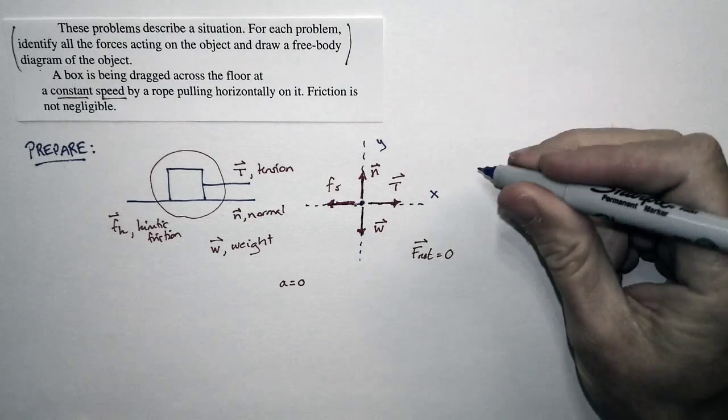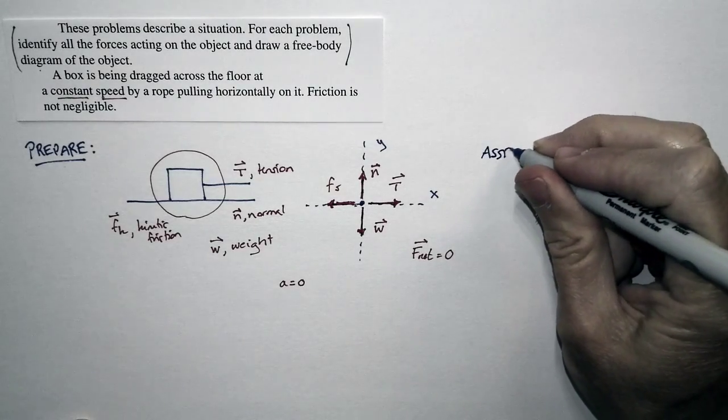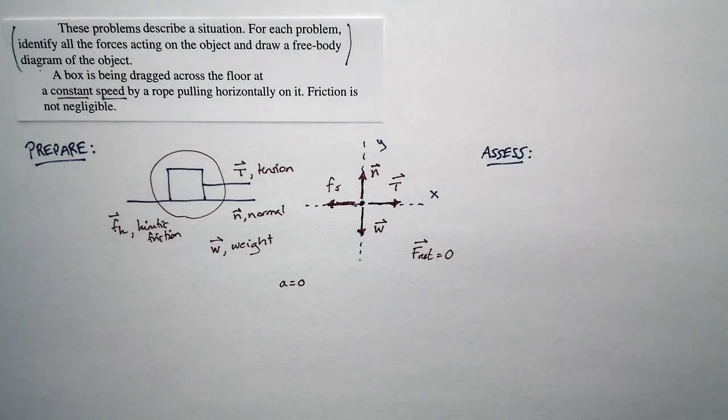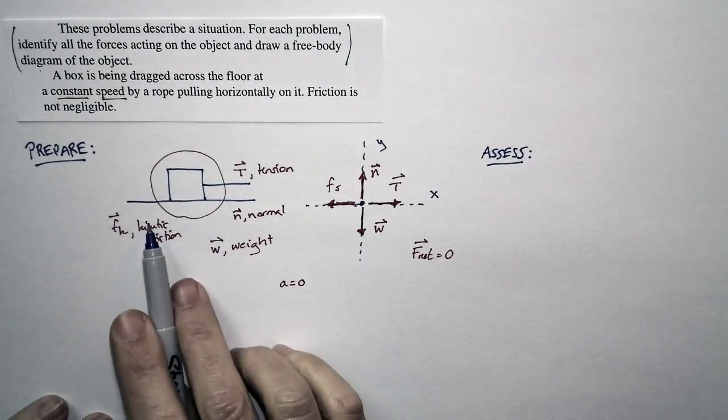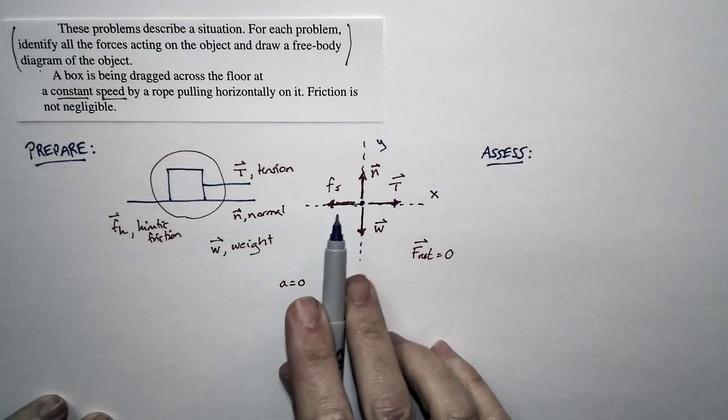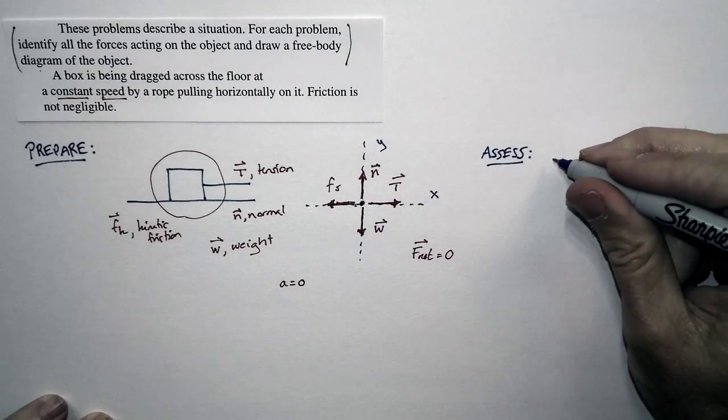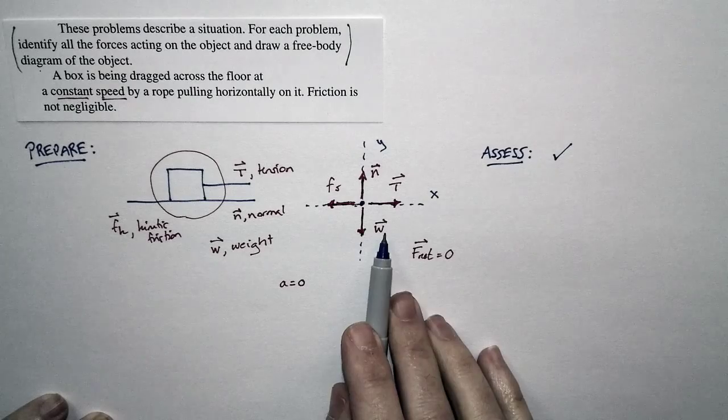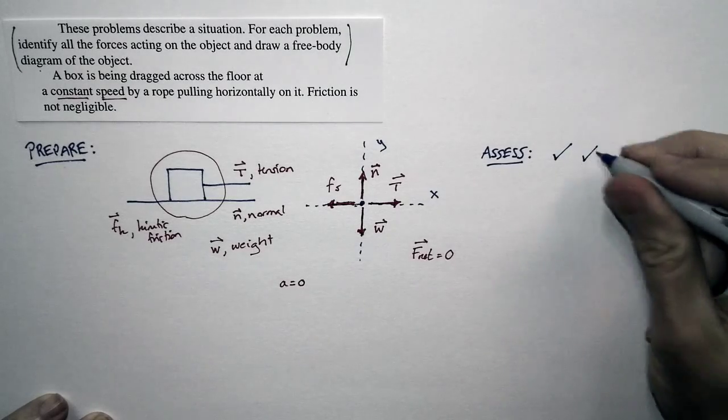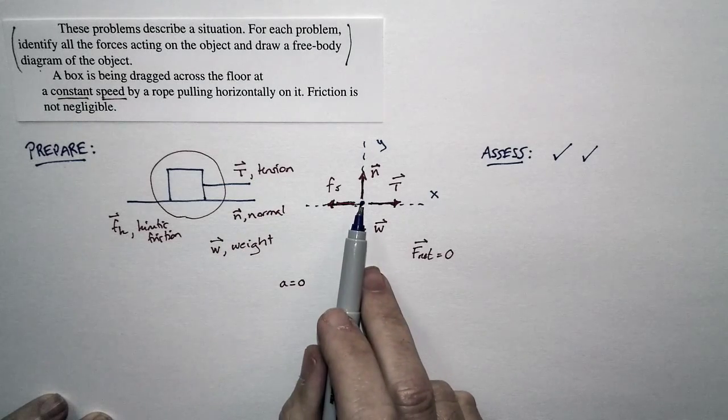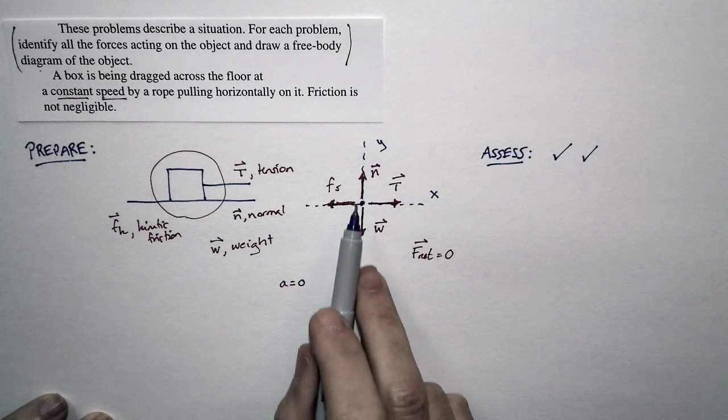Then let's assess what we've written. And basically, this is just, in this case, just a chance to look back and see if what we've done makes sense. There's two things that touch the box. There's the rope and there's the floor. We have a normal force, a friction force, and a tension force. Those are the only three forces that we can have. So that makes sense. There's also the long-range force of gravity. We've included this. We've also drawn the forces so that they act in the correct direction. The normal force is acting perpendicular to the surface.